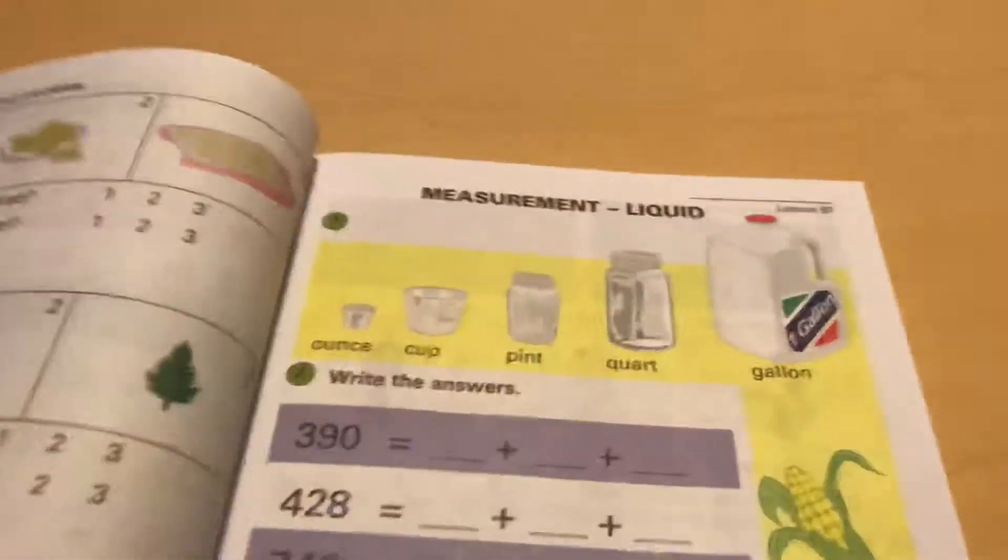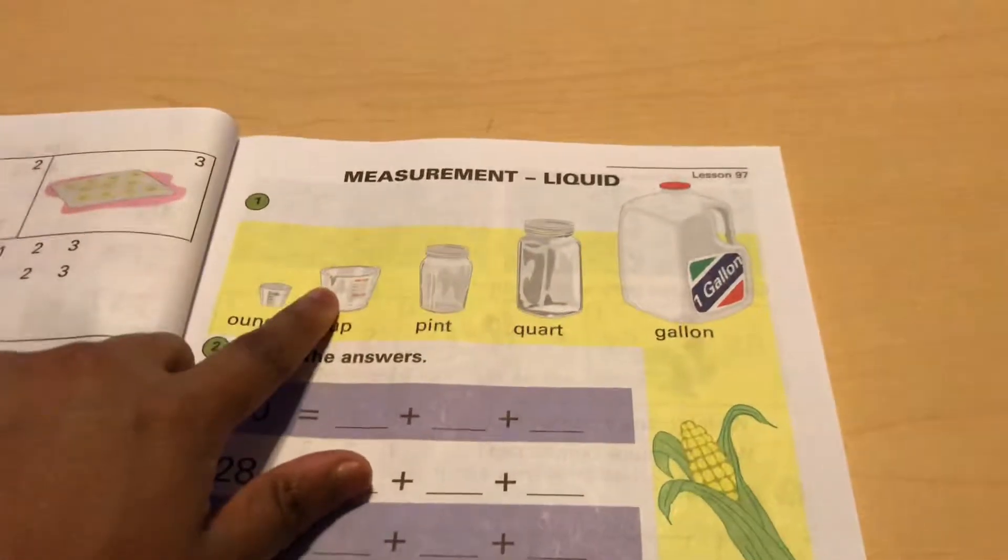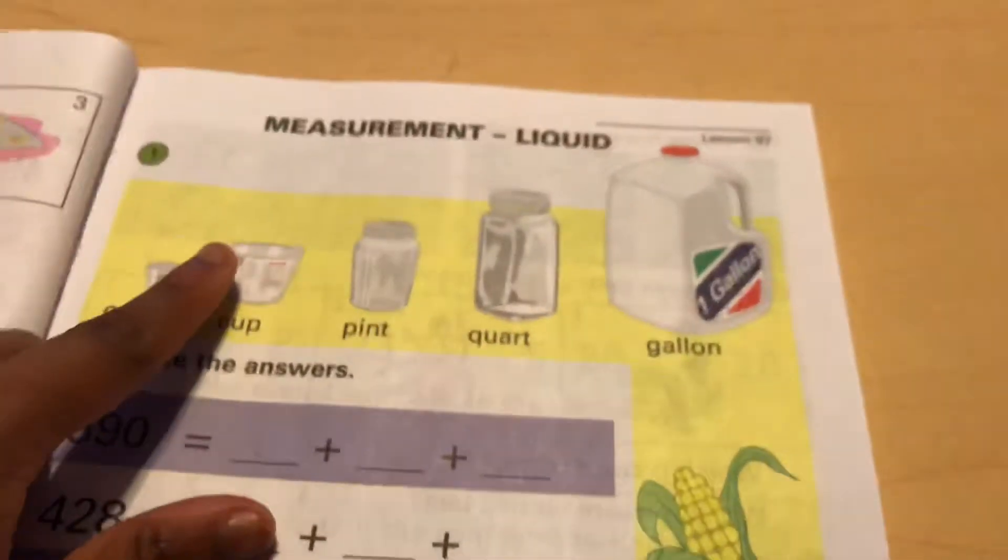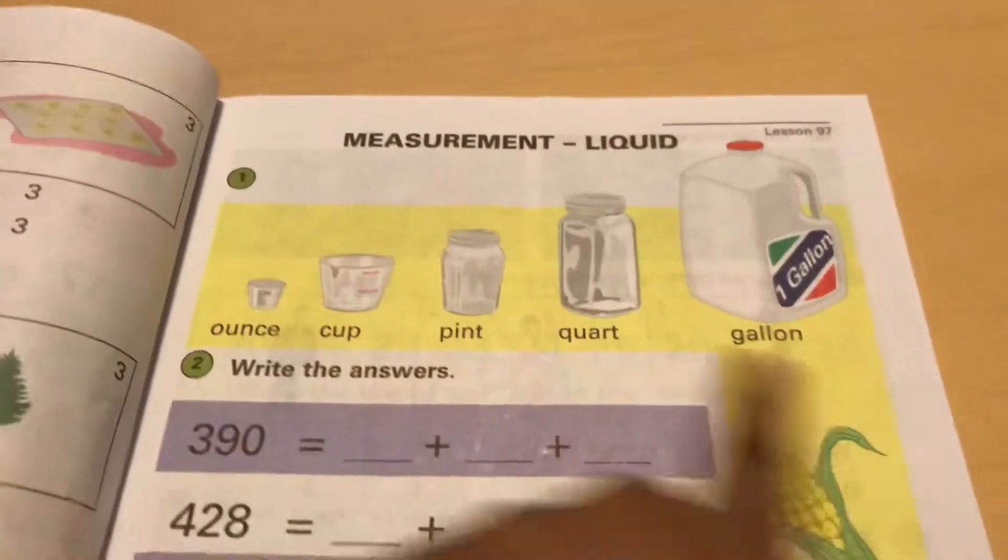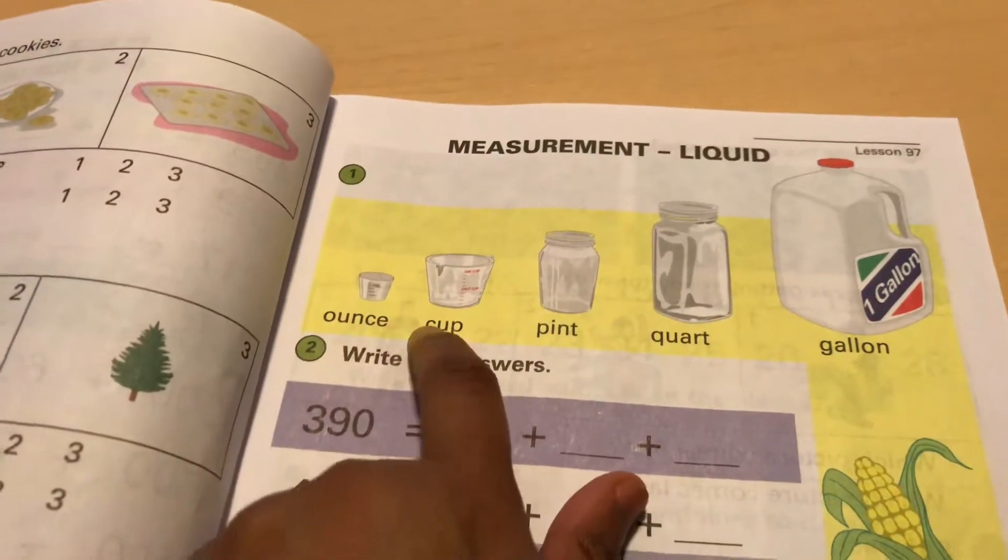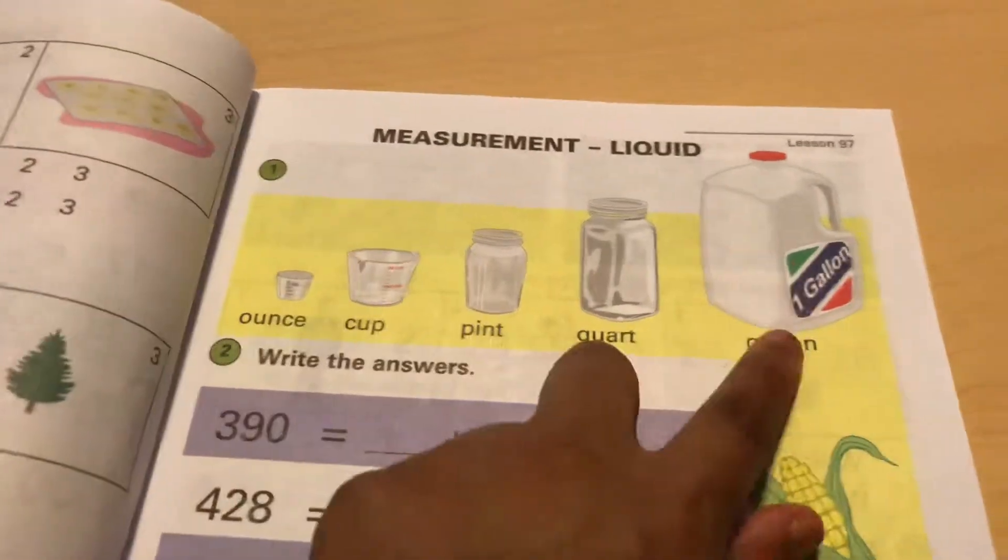Something that made me a little bit concerned was this lesson, which is lesson 97, measurement liquid. So they explain here this is an ounce, this is a cup, a pint, a quart, and a gallon.